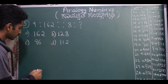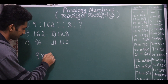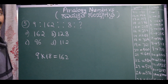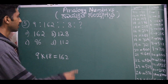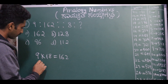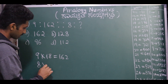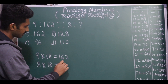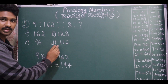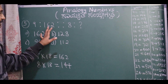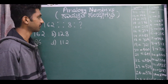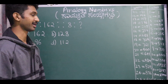Let us try multiplication. 9 times 18 equals 162 — okay, I think we have found a pattern. But now 8 times 18 gives us 144, and 144 is not an option. So this multiplication method is wrong. Another method is n squared plus 1 or n squared minus 1.